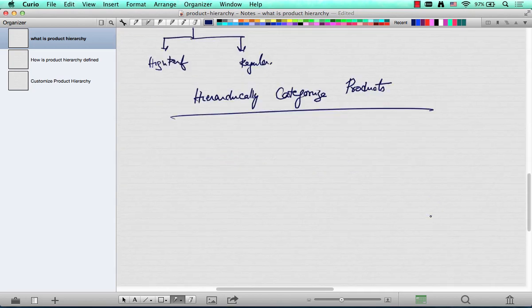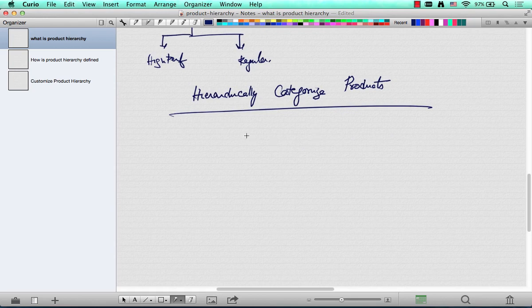Where do you set this product hierarchy? You set it in the material master MM01 or MM02 in the sales view.